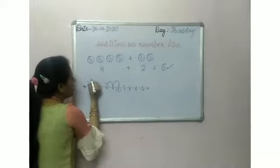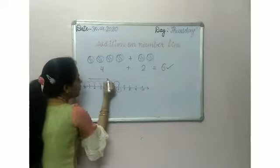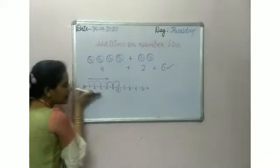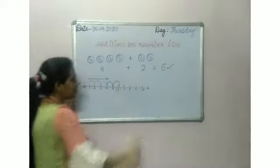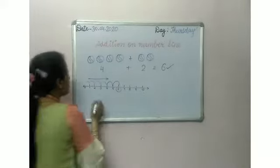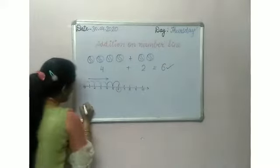We can do the same addition on a number line. And we can put an arrow at the right side. We will take another example of number line.